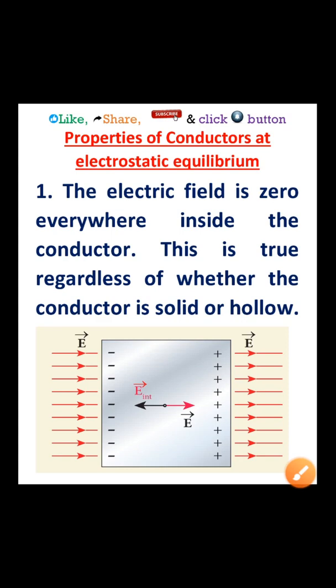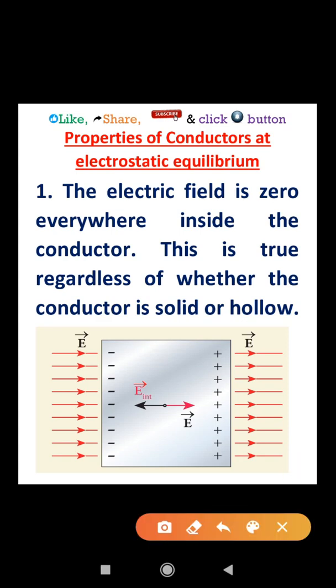In electrostatic equilibrium, there are certain conductor properties. First property: the electric field is zero everywhere inside the conductor. This is true regardless of whether the conductor is solid or hollow.